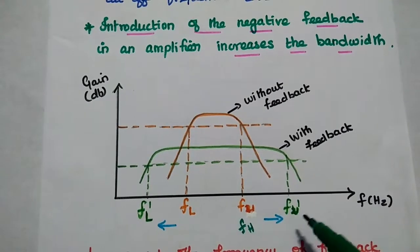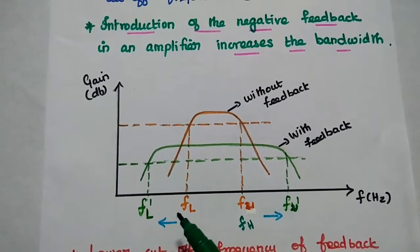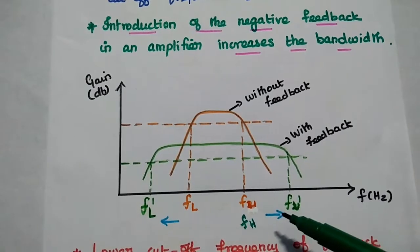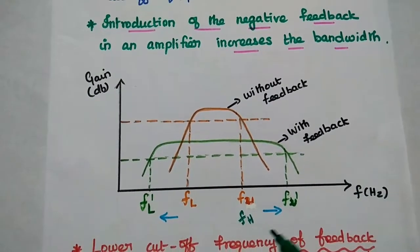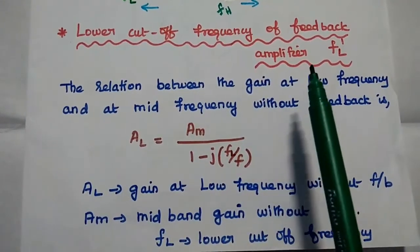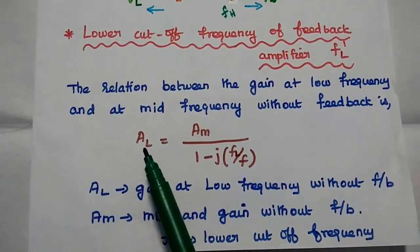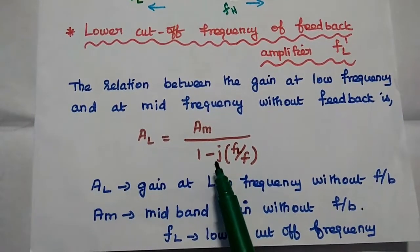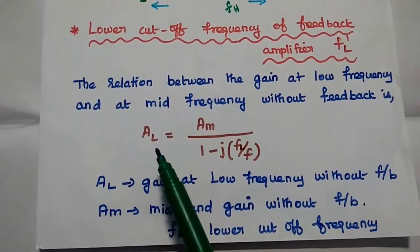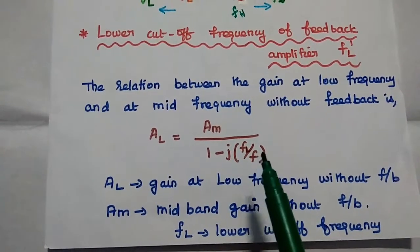FEL dash and FU dash represent the lower and upper cutoff frequencies for the amplifier with feedback. In the case of lower cutoff frequency, the value is decreased due to negative feedback; in the case of upper cutoff frequency, the value is increased. We are going to prove this property. The first step is to find the lower cutoff frequency of the feedback amplifier, FEL dash. The gain at low frequency can be expressed as AL = AM / (1 − j·FEL/F), where AM represents the midband gain.